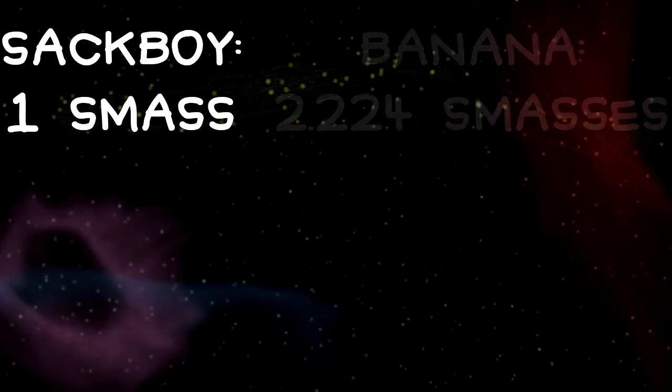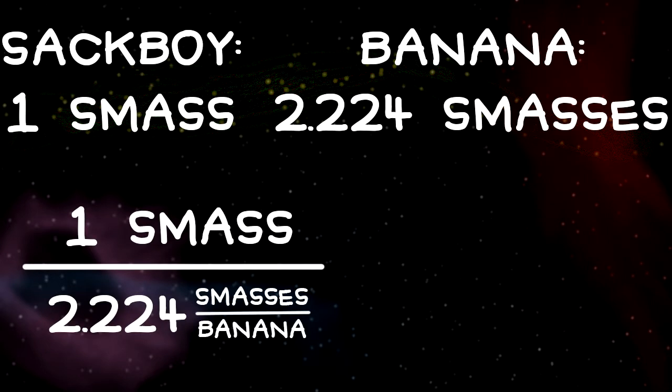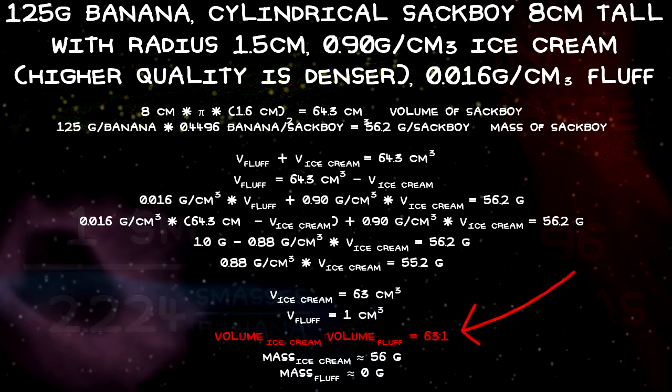Sackboy is one smass. One banana is 2.224 smasses. One smass divided by 2.224 smasses per banana is 0.4496 bananas. Sackboy is 0.4496 bananas. Is that good enough? Okay, just for fun, here's my approximation for Sackboy's fluff-to-ice-cream ratio.